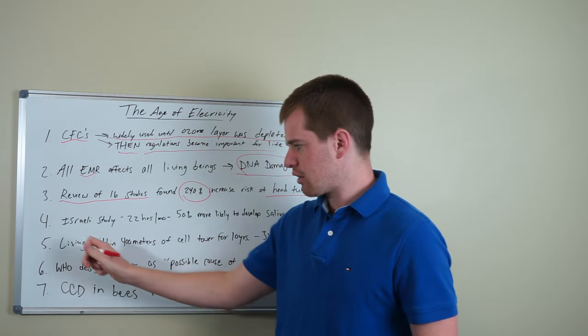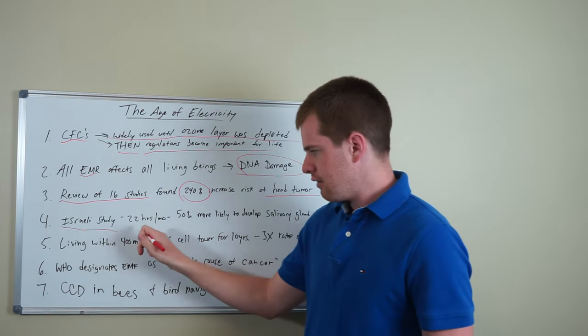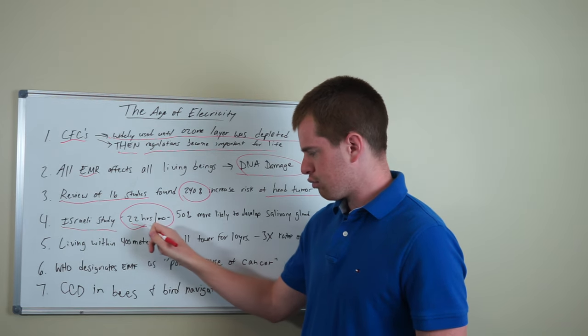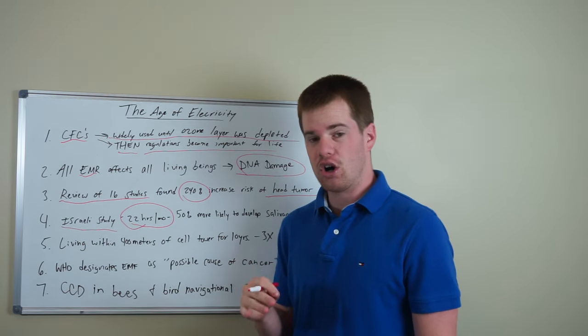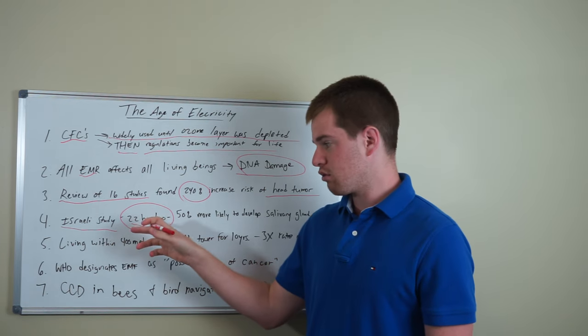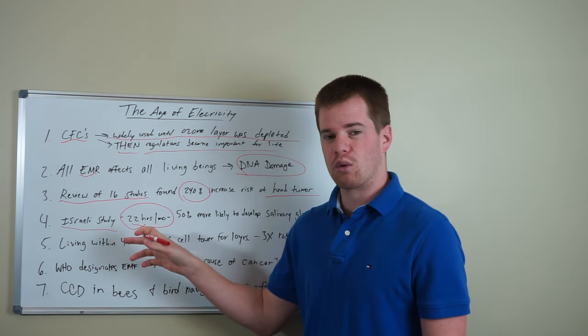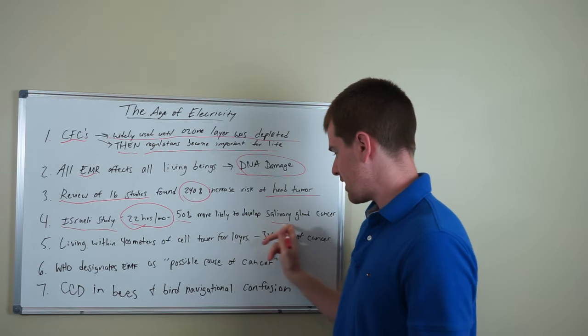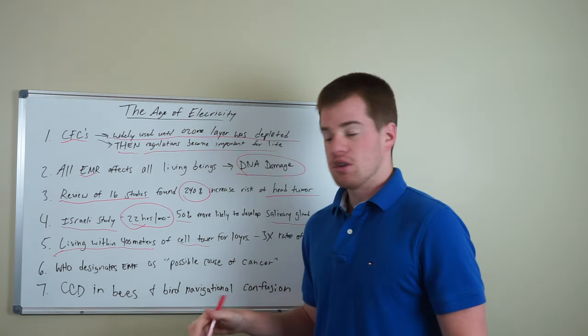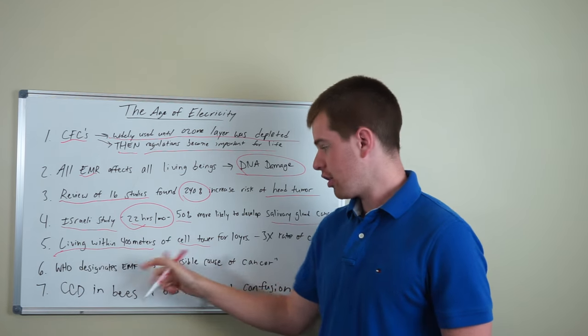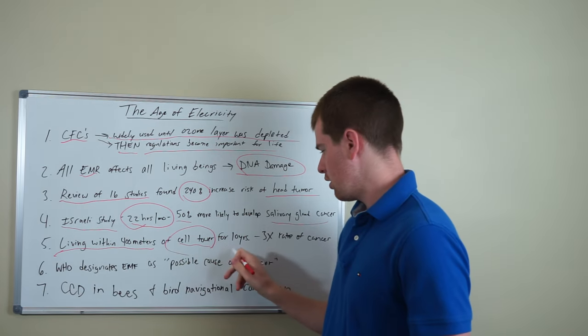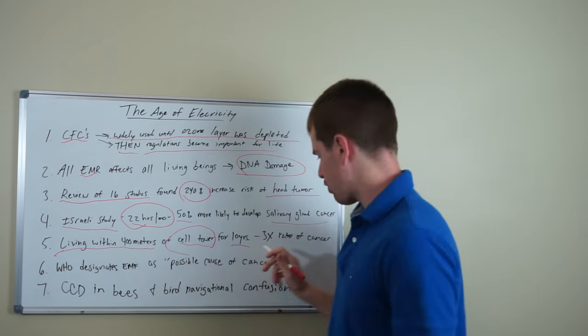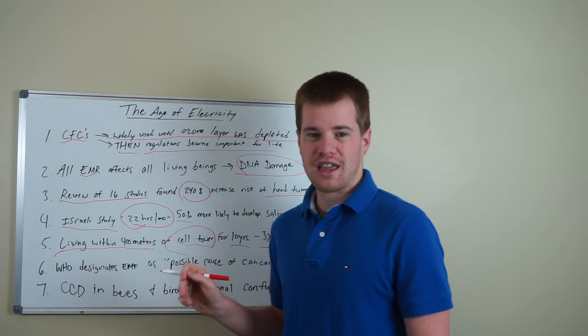There's another Israeli study that took data on cell phone use and found that if you're using a cell phone 22 hours a month, you were 50% more likely to develop salivary gland cancers. Living within 400 meters of a cell tower for 10 years, you have a three times rate of cancer.